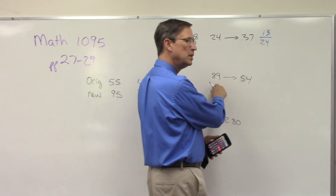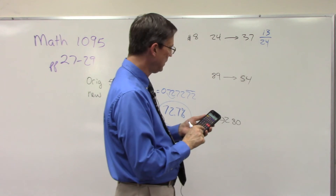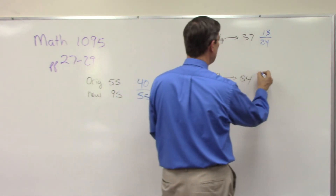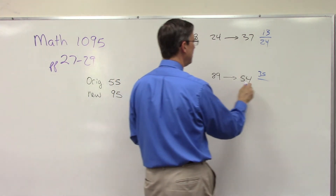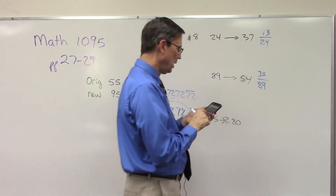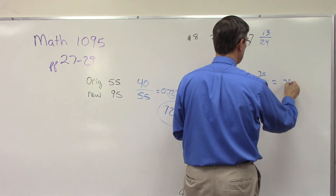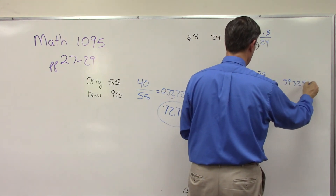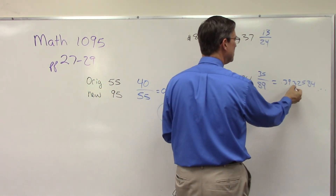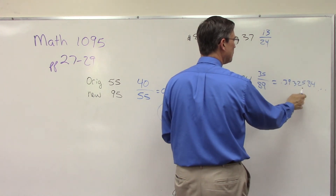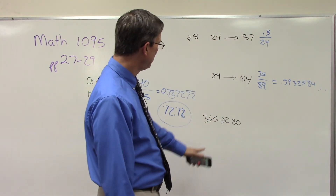This next problem is a little different — instead of going from a small number up to a bigger number, we're actually decreasing. We still do the larger number minus the smaller number: 89 minus 54 gives us 35. We always divide by the starting number, the original number, so in this case we divide by 89 and get 0.39325. Move the decimal twice and round to one decimal place.